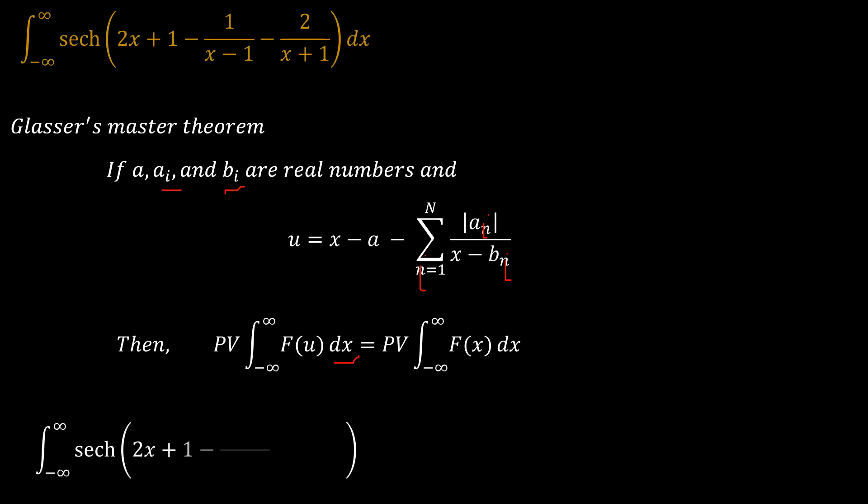And so if we have this expression here, we can create an abstraction such that we have hyperbolic secant of 2x plus 1/2 minus 1/2 over x minus 1 minus 1 over x plus 1, such that this here is our negative a, and this here is our absolute value of a_1, absolute value of a_2. This here is b_1, plus 1 is b_2.